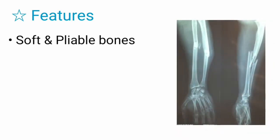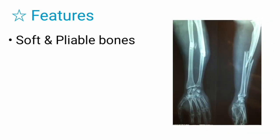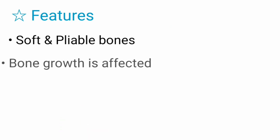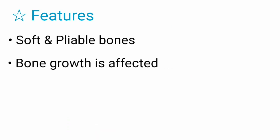Features of rickets: The main classical features of rickets are soft and pliable bones. This is due to poor mineralization as a result of poor absorption of calcium. Bone growth is markedly affected, mainly the weight-bearing bones.